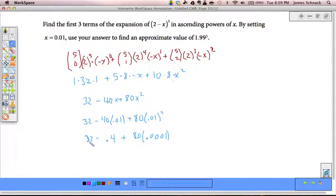40 times 0.01 is 0.4. So, we have 32 minus 0.4. That's going to be 31.6. Plus, 80 times 0.0001. That's going to be 0.0080.